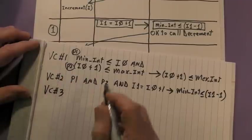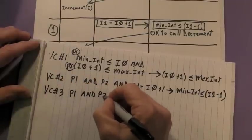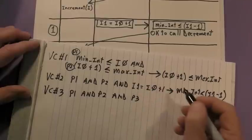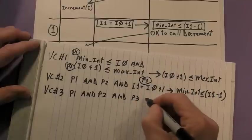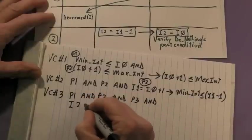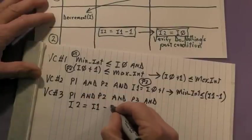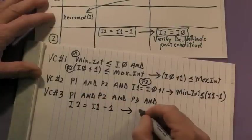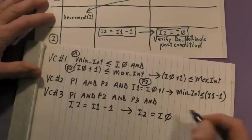Now, let's write down the premises from the previous VCs, so we write down P1 and P2, and P3, which comes from VC number 2, followed by I2 equals I1 minus 1, the premise from the current state, then the implication symbol, and the conclusion.